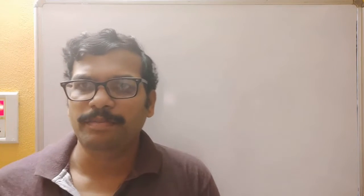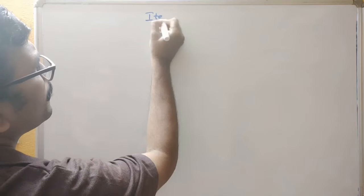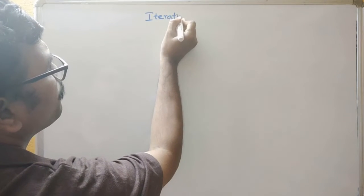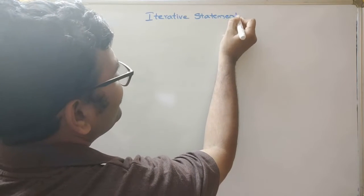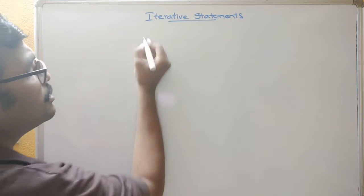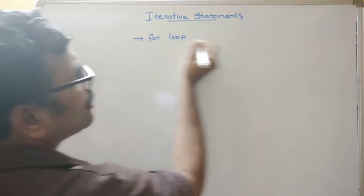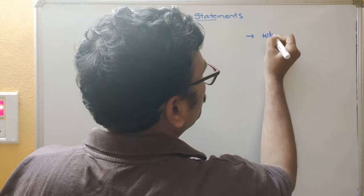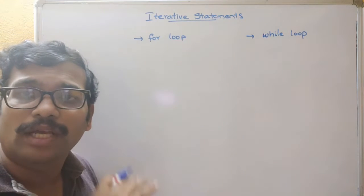Hello friends, welcome back to our channel. In today's session we'll discuss iterative statements in shell scripting. There are mainly two things: one is a for loop and another one is a while loop. Let us see this in the session and I will show you the practical implementation in the Ubuntu terminal.